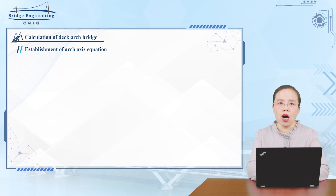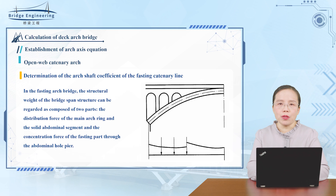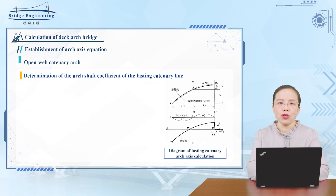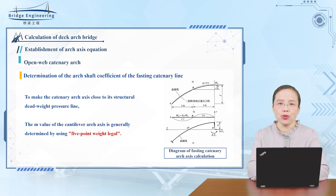Open Web Continuous Arch. In open web arch bridges, the structural dead weight of the span structure can be divided into two parts: the distributed force of the dead weight of the main arch ring and the solid web section, and the concentrated force transmitted by the open web section through the web members.